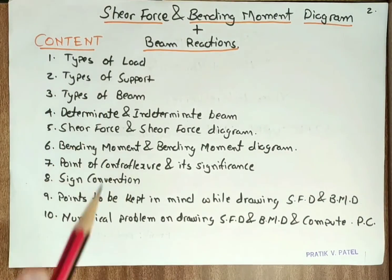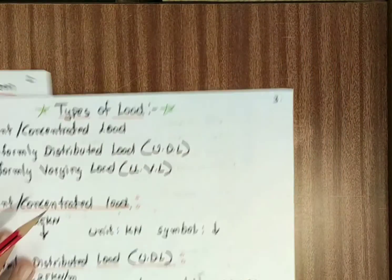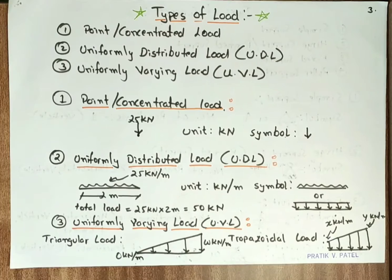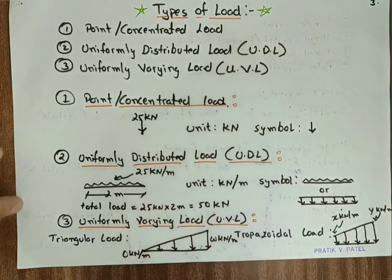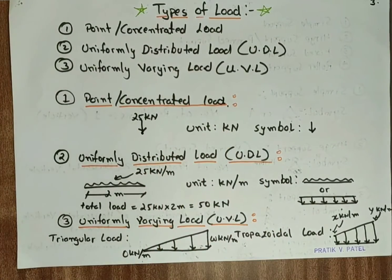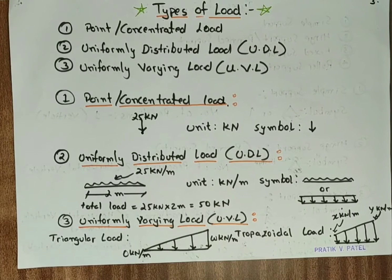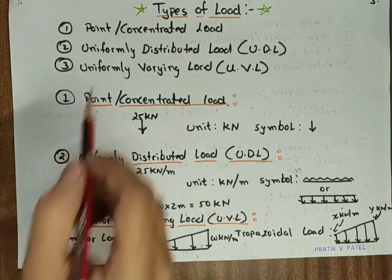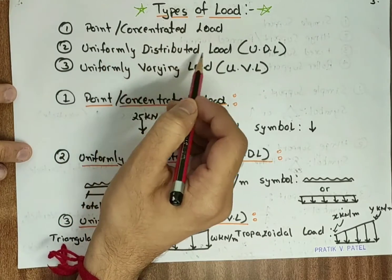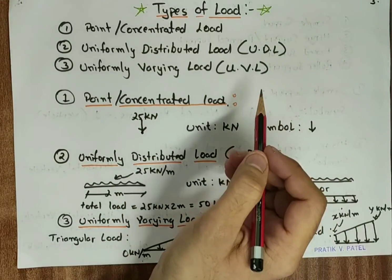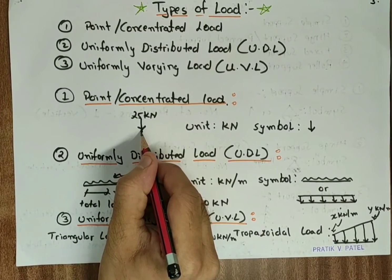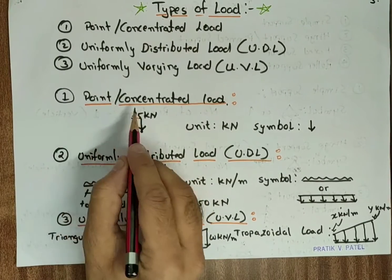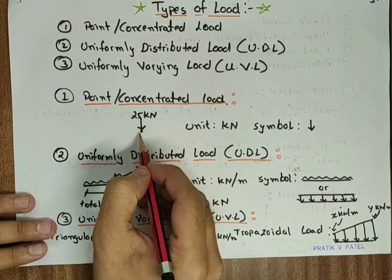Our first topic will be types of load. The basic meaning of the word 'load' is something that can be carried, like weight. If we talk about a beam, it may be subjected to the following three types of load: point or concentrated load, uniformly distributed load, or uniformly varying load. When load is acting on a relatively small area — that is, a point — it is known as a point or concentrated load, because the entire load is concentrated on a single point.